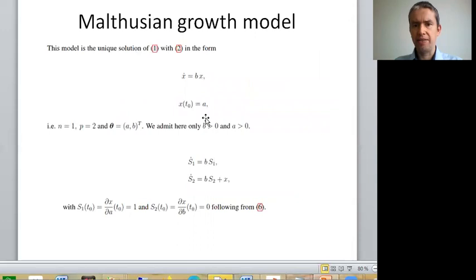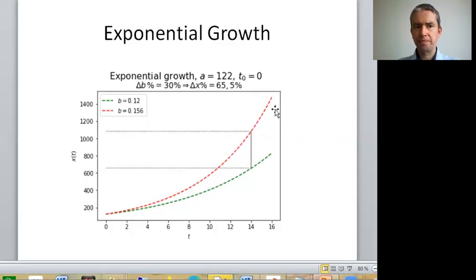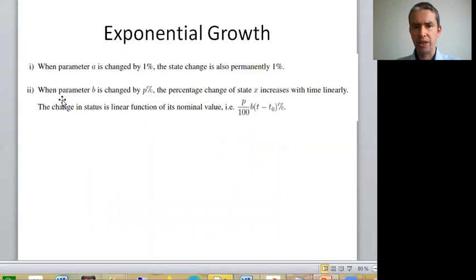For the growth model, which is the exponential growth model (also called Malthusian growth model), we have two parameters: B, which is the rate, and A, which is the initial value at time t=0. We can construct two differential equations. Surprisingly, the initial growth has only constant influence, but B has a pretty strong influence. Imagine the change of B in percentage: instead of being 30%, it's changing the output in one to two weeks by 65.5%, and this will depend on the time scale. The longer the time, the higher the change.